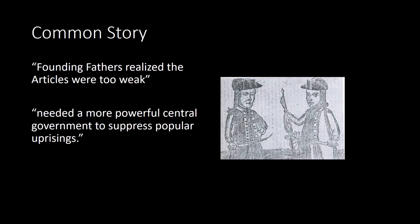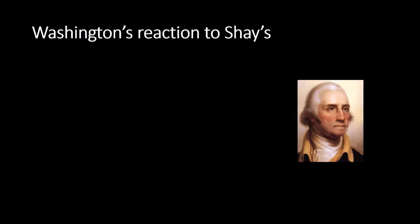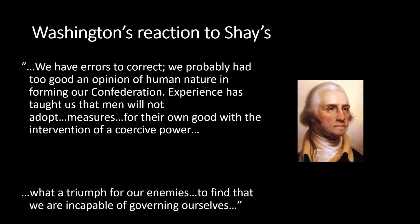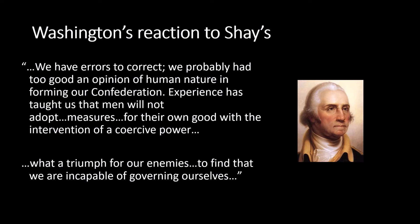A common story in many textbooks is that the founding fathers saw Shays' Rebellion and realized the Articles were too weak — that they needed a more powerful central government to suppress popular uprisings and prevent anarchy. George Washington wrote after Shays' Rebellion: 'We have errors to correct. We probably had too good an opinion of human nature in forming our confederation. Experience has taught us that men will not adopt measures for their own good without the intervention of a coercive power. What a triumph for our enemies to find that we are incapable of governing ourselves.'